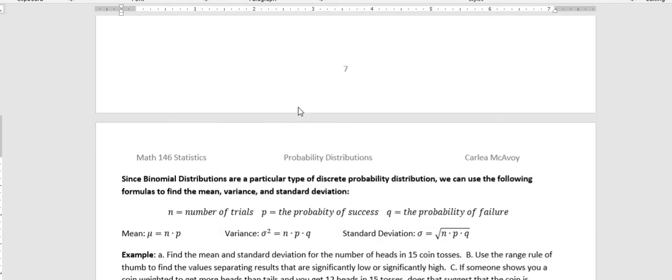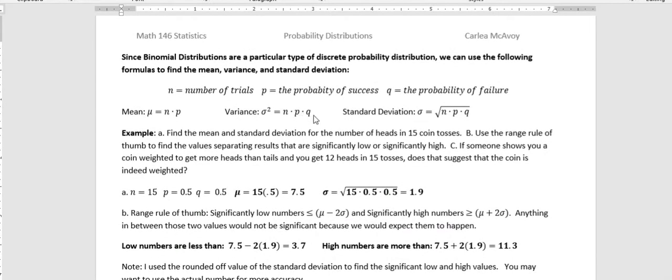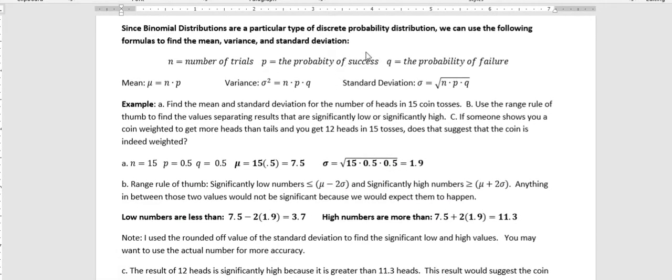But when we're talking about binomial distributions, that's a very particular type of a discrete probability distribution. And we can use some simpler formulas for the mean, variance, and standard deviation of those.